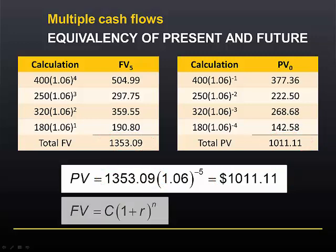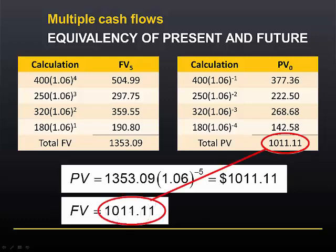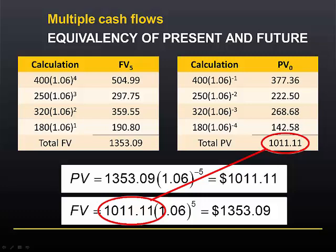We can go the other way. This is the formula for the future value of a single cash flow. If we treat that $1,011.11 as a single cash flow at time period 0 and grow it at 6% for 5 years, we get a number that's exactly equal to the future value.